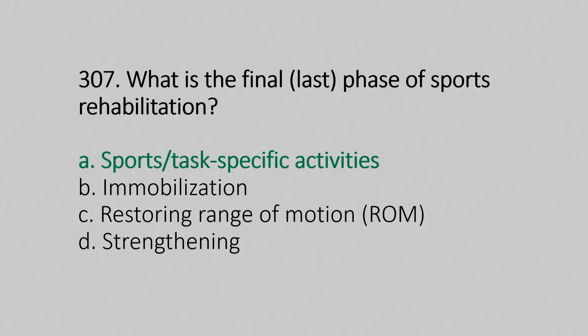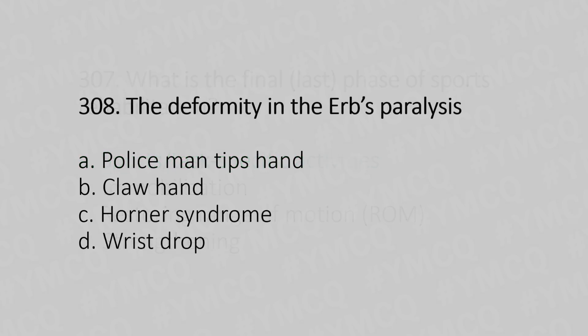Question 308: The deformity in Erb's palsy is — Option A: policeman's tip hand. Option B: claw hand. Option C: Horner syndrome. Option D: wrist drop. The answer is Option A, policeman's tip hand.